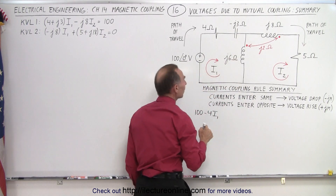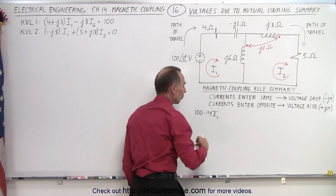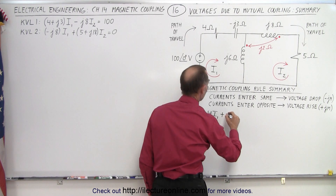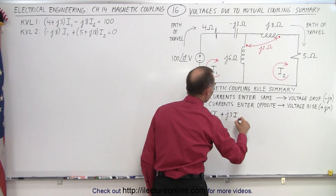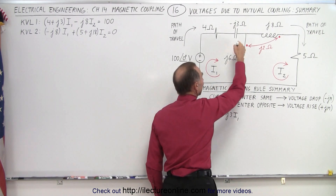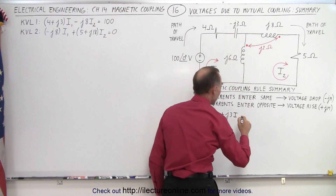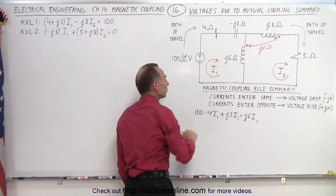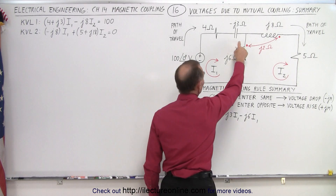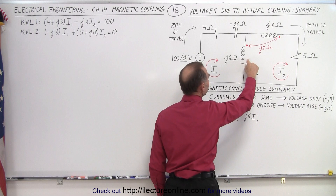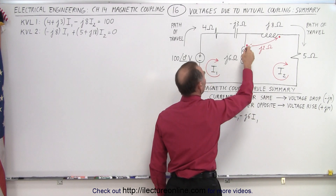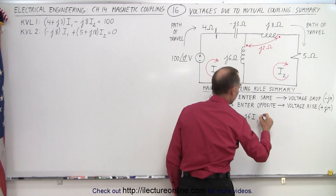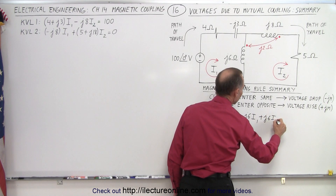Then we have a voltage drop again — we travel in the same direction as the current across the capacitor — but notice that we have a negative reactance, so a negative drop becomes a positive number: plus j3 times the current. Then we go across this inductor again with the current in the same direction, so that's a voltage drop: minus j6 times I1, and now we're back at the same spot. However, the current I2 also goes through this inductor in the opposite direction to our path of travel, so that gives us a voltage rise: plus j6 times I2.